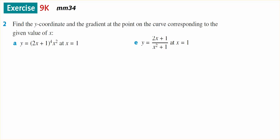This is for Year 12 Methods, number 2 out of 9k. Find the y-coordinate and the gradient at the point corresponding to the x value. What we're after in this particular case is the y-coordinate, so y of 1, and the gradient, which will be y dash of 1.